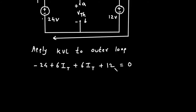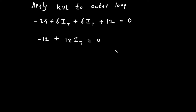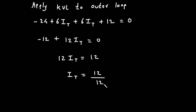Solving: minus 24 plus 12 gives minus 12, and 6IT + 6IT + 6IT gives 12·IT. So 12·IT = 12, therefore IT = 12/12 = 1 Ampere.